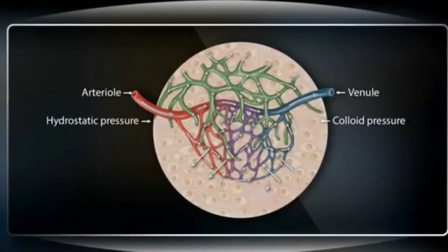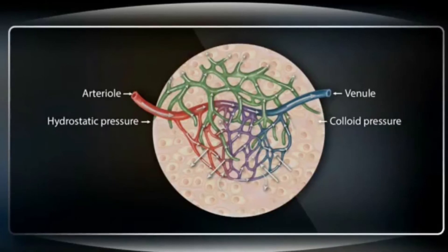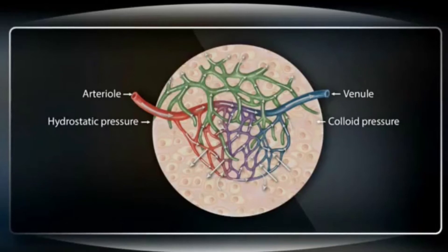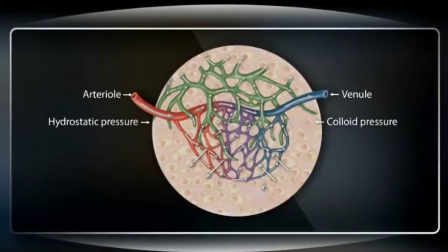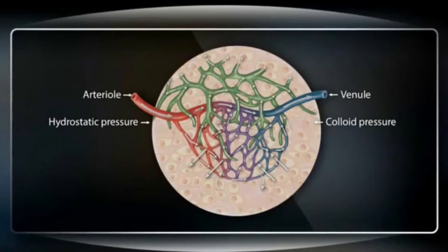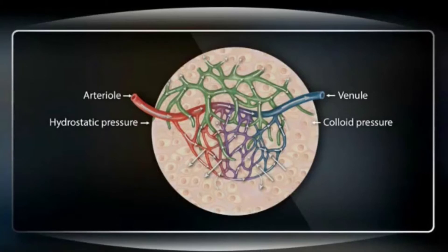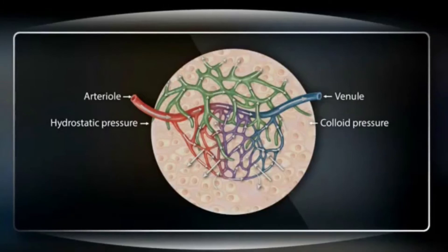The capillary bed helps to circulate blood from arteries to veins. The hydrostatic pressure within the capillary bed, especially at the arterial end, forces fluid out into the tissue spaces. As blood continues toward the venous end, the colloid oncotic pressure in plasma proteins pulls fluid back into the vascular tree.